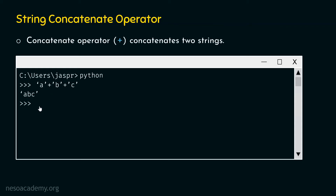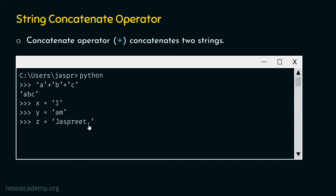Now let's type this command: x equal to 'I'. We are giving the name x to this string with just one character. Let's type y equal to 'am', so we have another string with variable y pointing to it. Then let's type z equal to 'just breathe.' — we need to add the full stop as well. So we have three variables x, y, and z, each pointing to their respective strings.